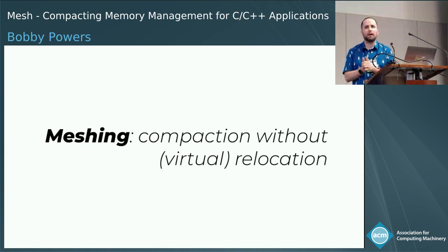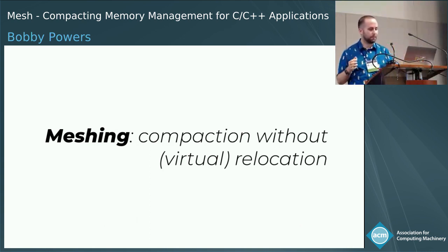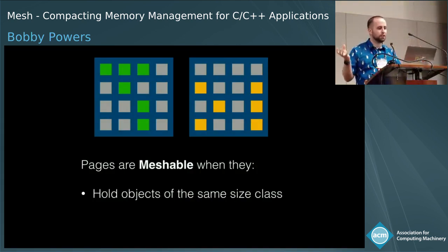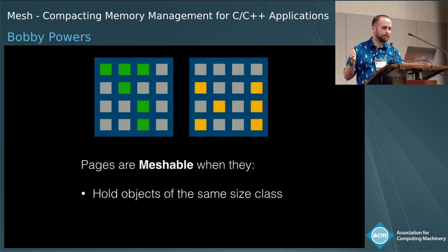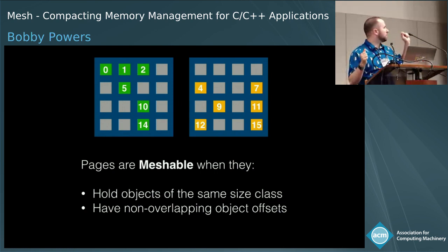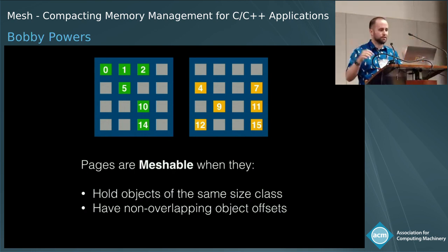We call the mechanism we use to compact the heap "meshing," which is compaction without virtual relocation. We consider two pages eligible for this type of compaction when two things hold: these pages have objects of the same size class, and they have non-overlapping object offsets — that is, the sets of offsets of live objects from the start of the page are disjoint.